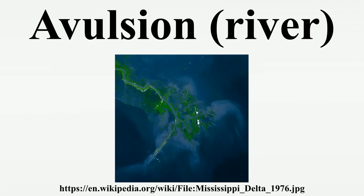Deposition from the river results in the formation of an individual deltaic lobe that pushes out into the sea. An example of a deltaic lobe is the bird's foot delta of the Mississippi River, pictured at right with its sediment plumes. As the deltaic lobe advances, the slope of the river channel becomes lower because the river channel is longer but has the same change in elevation.